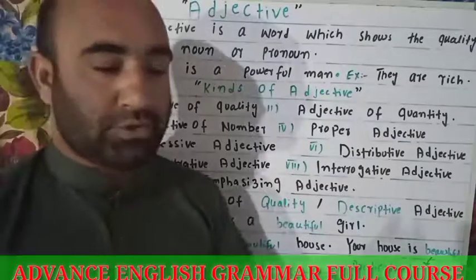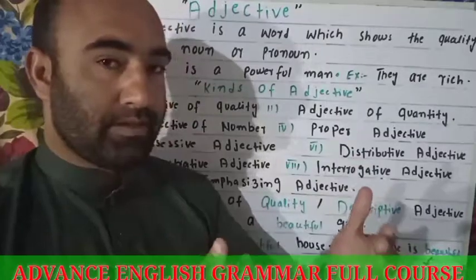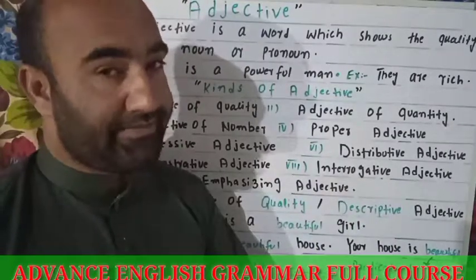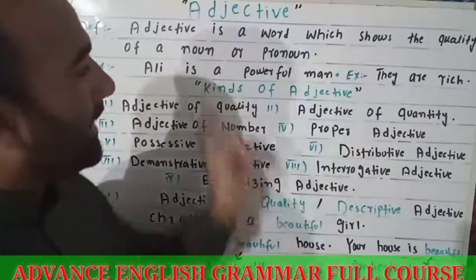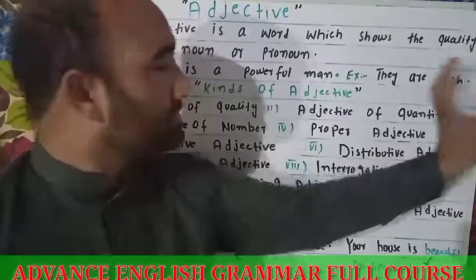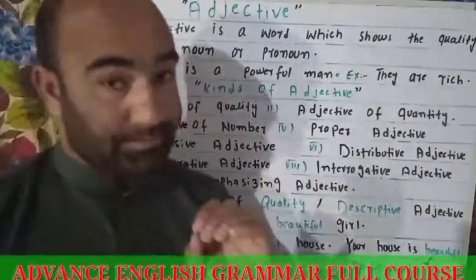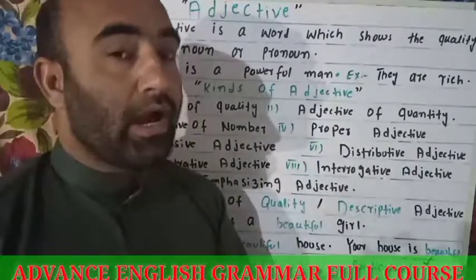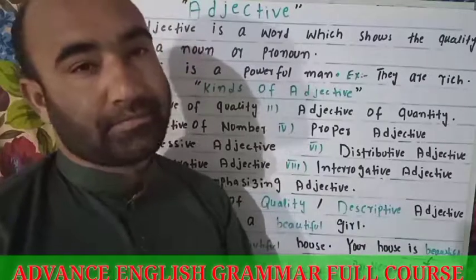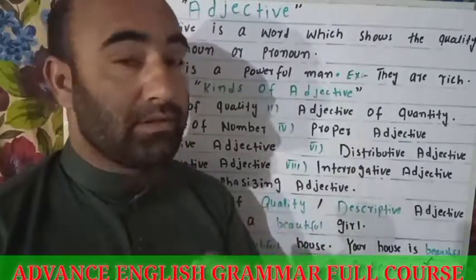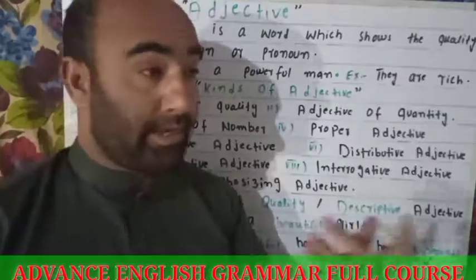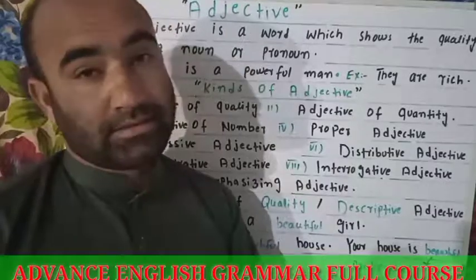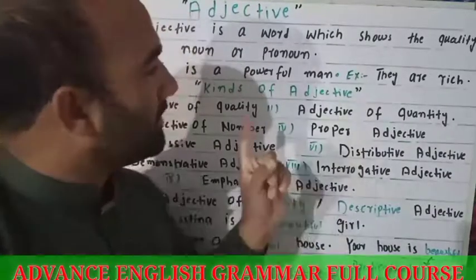Adjective means to add something to the meaning of a noun or pronoun. The complete definition is that adjective is a word which shows the quality of a noun or pronoun. A noun is a naming word — it is the name of a person, place, thing, animal, and idea. All those things which exist in this world are called a naming word, a noun.